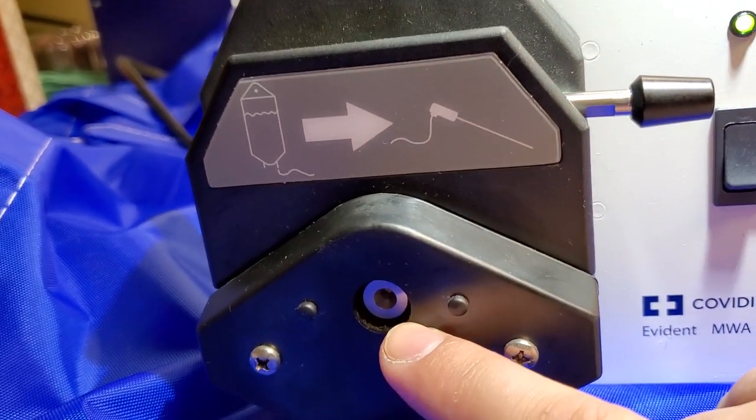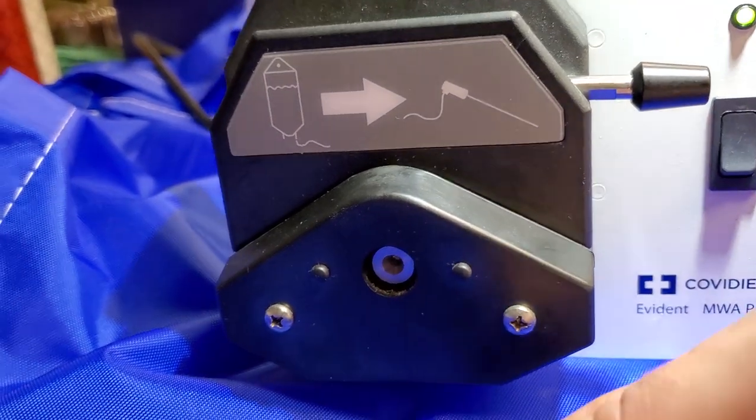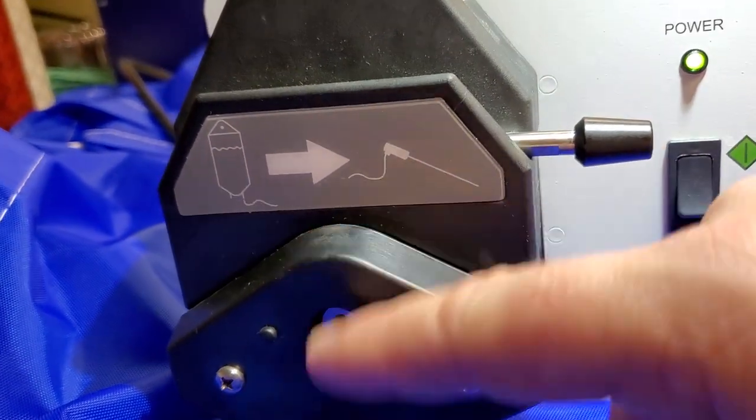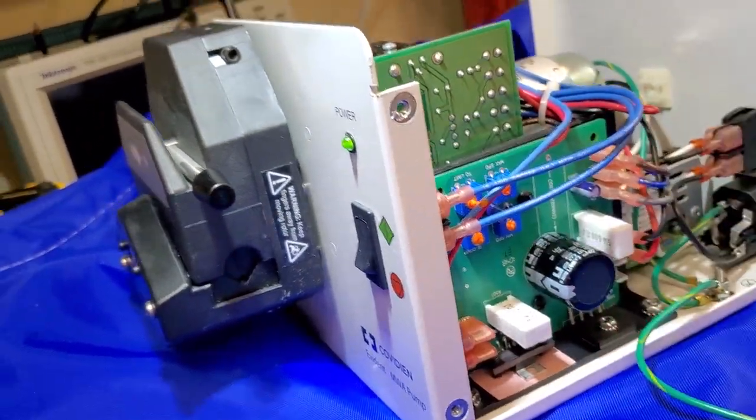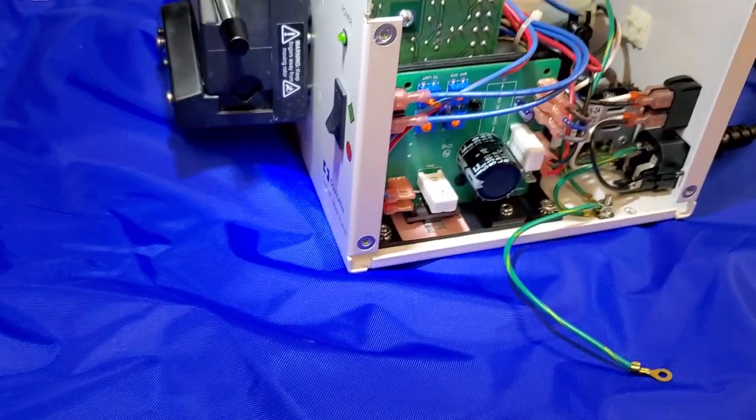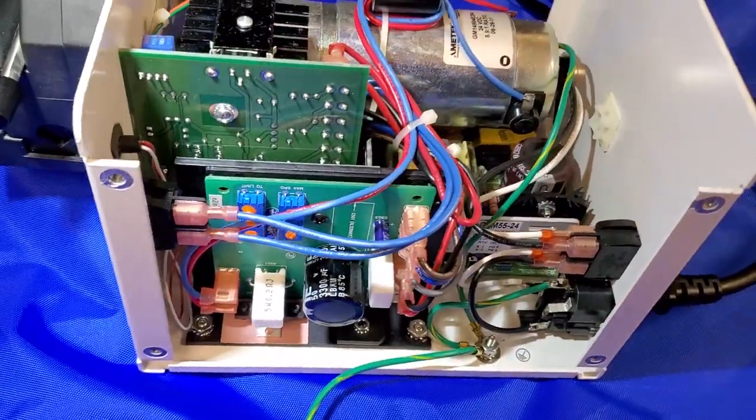This little spot right here is so that you can put a contact tachometer on there, and you can calibrate right here. You can calibrate the speed of the pump, which gives you your flow output.